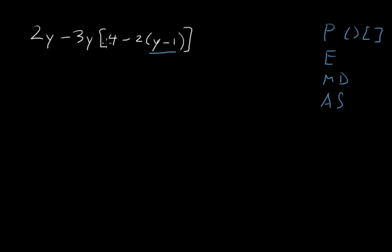That would be next inside this large quantity. We have negative 2 times y and negative 2 times negative 1. So what we get is negative 2y plus 2. We've just done the multiplication step.